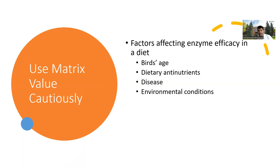Another consideration is factors that can affect enzyme efficacy in a diet, like bird's age, dietary anti-nutrients, disease, and environmental conditions. When talking about bird's age, it means that the matrix value you use in diet formulation can vary depending on the bird's age. In a previous video, I talked about using pre-starter and super pre-starter diets and explained some limitations around using certain ingredients like fat.